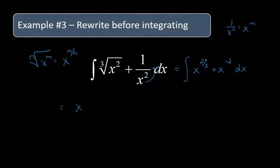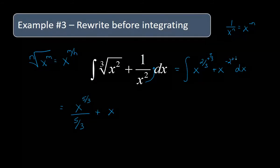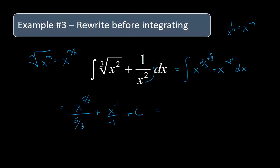So I'm going to have x — if I add one, you get good at fractions doing this so many times — adding one is like adding three over three, so we're going to have x to the five thirds divided by five thirds. We'll simplify in a second. Plus x — now we add one to the negative two, so make sure your arithmetic is good — we're going to have negative one over negative one, and then plus C. Dividing by a fraction is the same as multiplying by its reciprocal, so we'll have three fifths x to the five thirds. Since it's negative on top with the x to the negative one, we bring it back down: minus one over x, and then plus C.